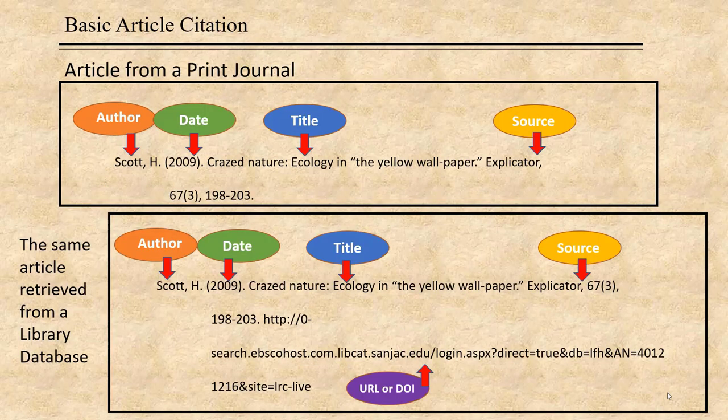Let's start with a basic article citation, since you're going to be citing a lot of articles. You start with the author, last name first, followed by a comma, then first initial, period. Then the date of the article in parentheses, followed by a period. Then the title of the article in regular font, with the first word of the title, the first word of the subtitle, and any proper nouns as the only words capitalized, followed by a period.